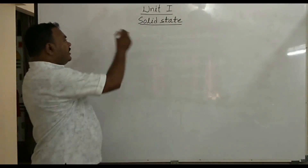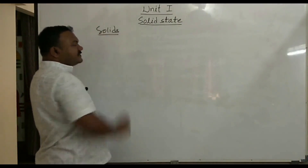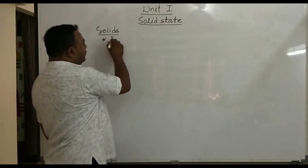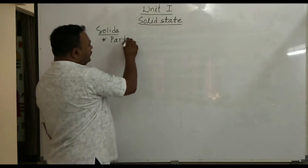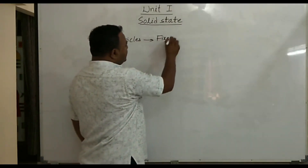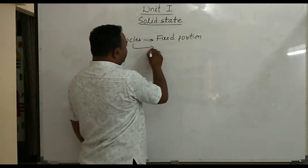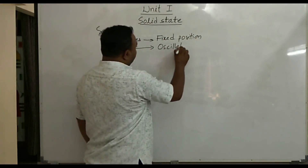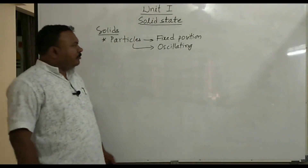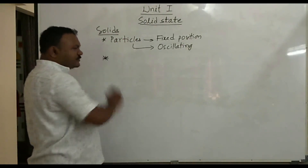On this basis, we define solids. What are solids? Solids are substances in which particles are in fixed positions. The position of the particles is fixed, and these particles simply oscillate about their mean position. Based on the arrangement of the particles, we get different properties for solids.